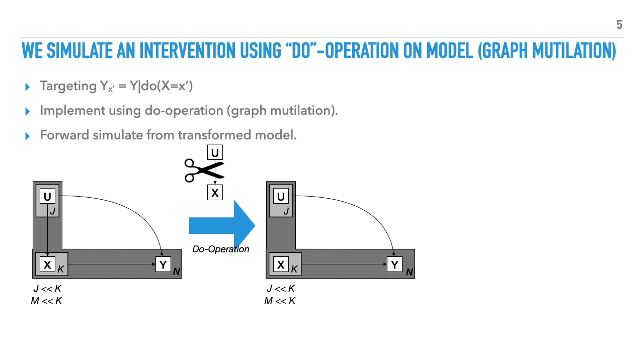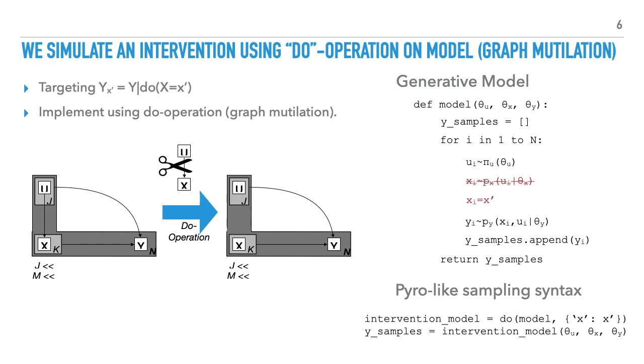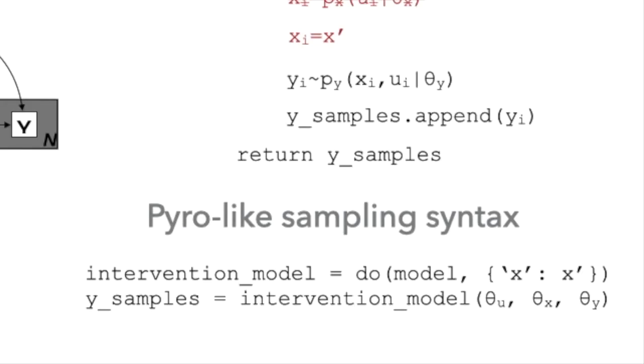Causal directed graphical models give us a tool for simulating intervention called graph mutilation. In graph mutilation, we remove the incoming edge to X, set its value to the intervention value small x prime, and then we can forward simulate from this transformed model. In the general case of probabilistic programming, we can view this as a kind of program transformation, one that replaces the expression that samples the variable X with one that assigns it a constant value, breaking its dependence on any expression that came before it in the program. We then sample from this transformed model. The pseudocode here shows how we can implement something like this in a probabilistic programming language like Pyro, using something like Pyro's do operator, which will transform the program.